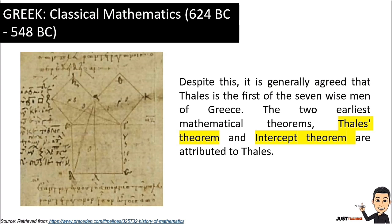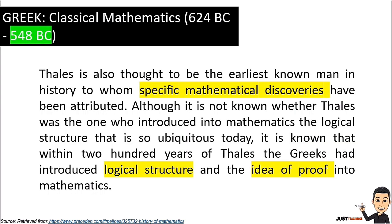The two earliest mathematical theorems — Thales' theorem and the intercept theorem — were both attributed to Thales. Thales is also thought to be the earliest known man in history to whom specific mathematical discoveries have been attributed. Although it is not known whether Thales was the one who introduced mathematics, it is known that within 200 years of Thales, the Greeks had introduced logical structure and the idea of proof into mathematics.